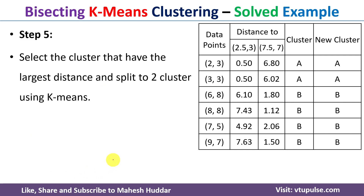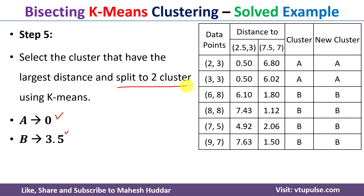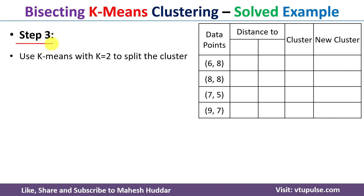In step five we select the cluster with the largest sum of squared distances. For A it is 0 and for B it is 3.5, so we select cluster B. We will divide cluster B into two more clusters using the k-means algorithm. Going back to step three, we take only the four data points in cluster B and apply k-means with k equal to two.